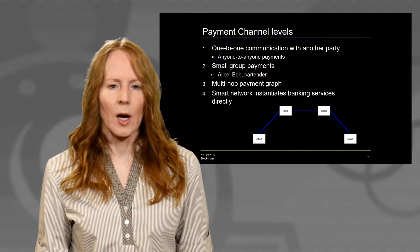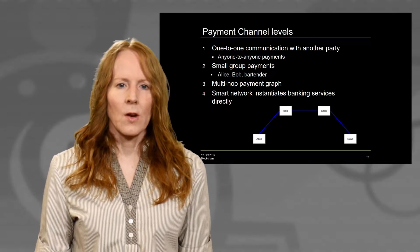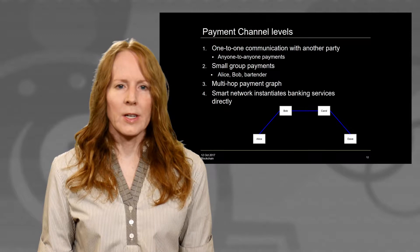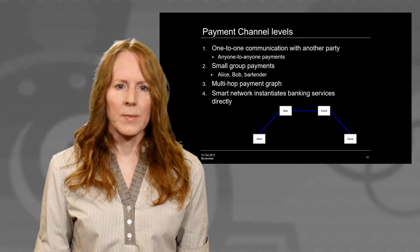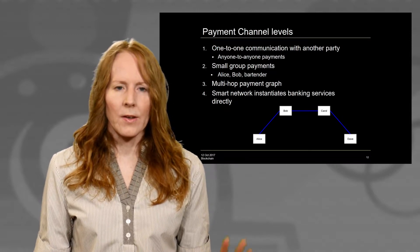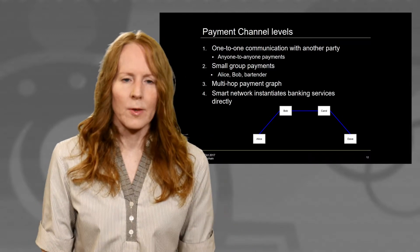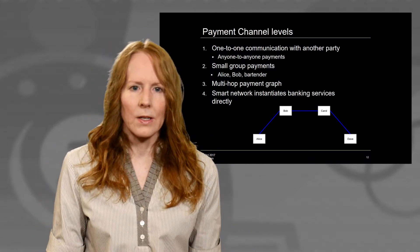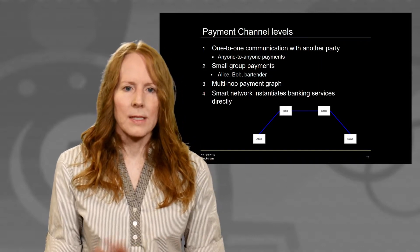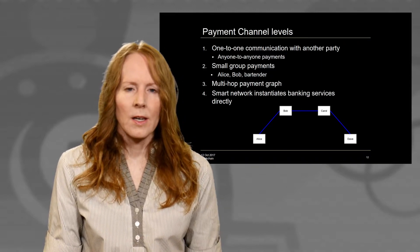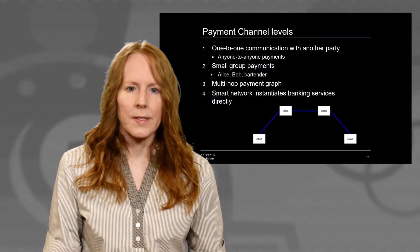The third level is a multi-hop payment graph envisioned by the Lightning Network, where every node might offer peer services, or there might be hubs. There are many different ways this might be done and in which this might be problematic, but the concept is vast peer-to-peer networks that are financial graphs.